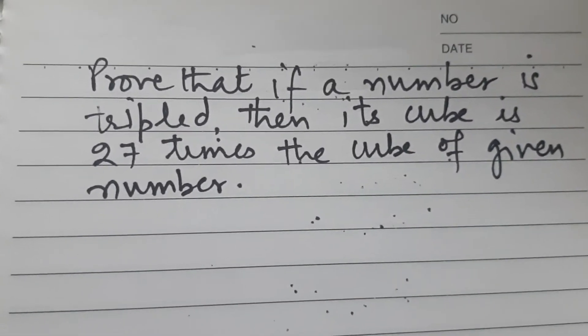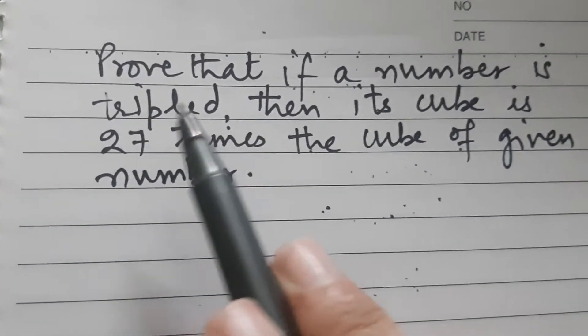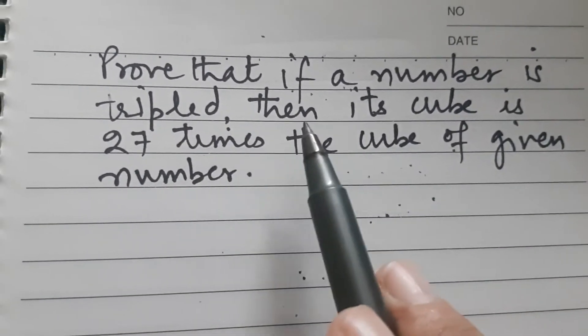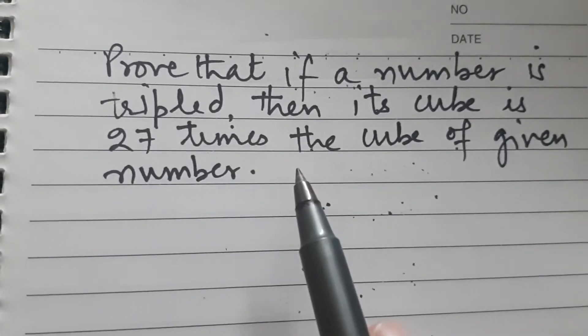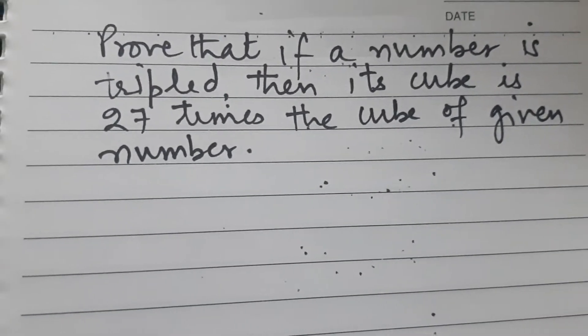Dear students, let us do this interesting question. Prove that if a number is tripled, then its cube is 27 times the cube of the given number.